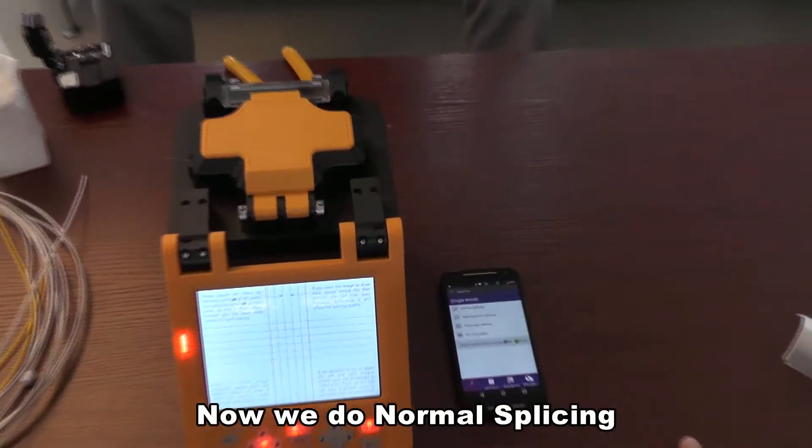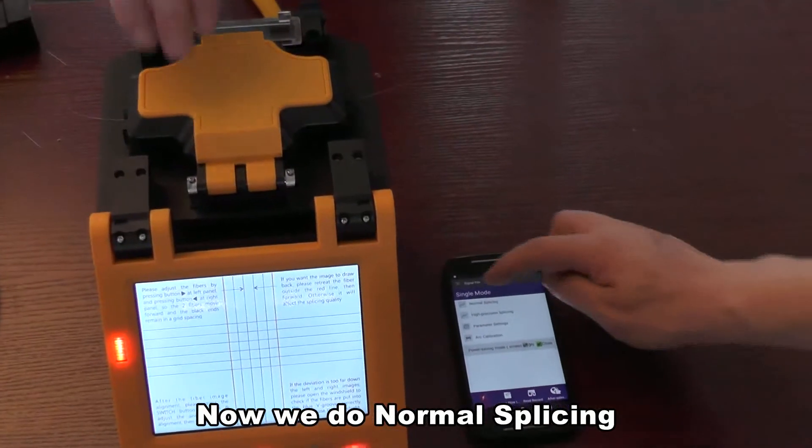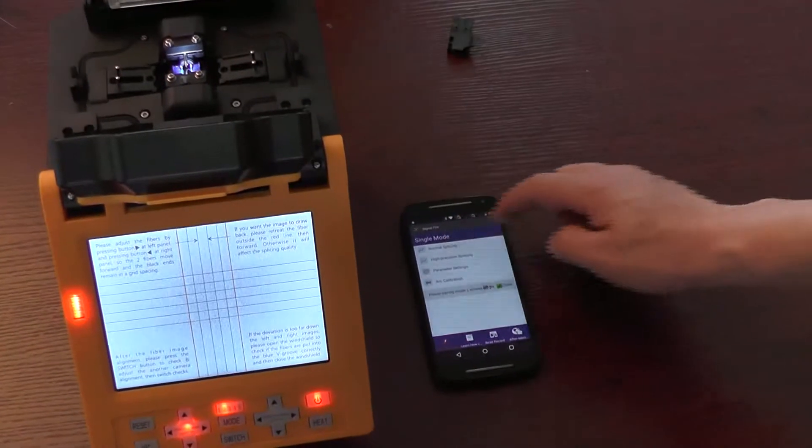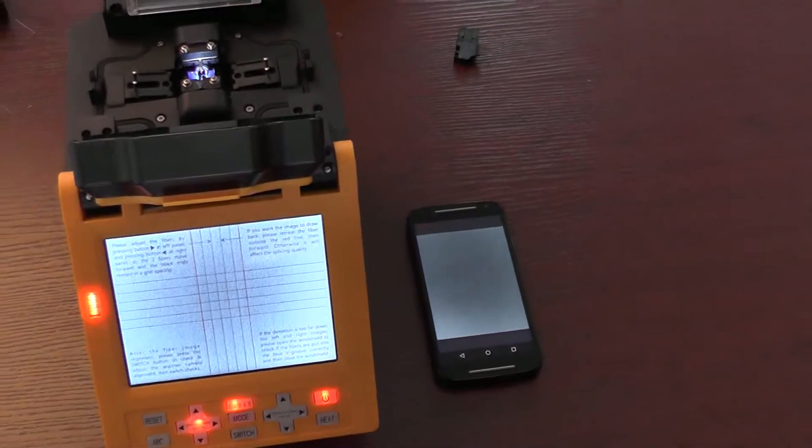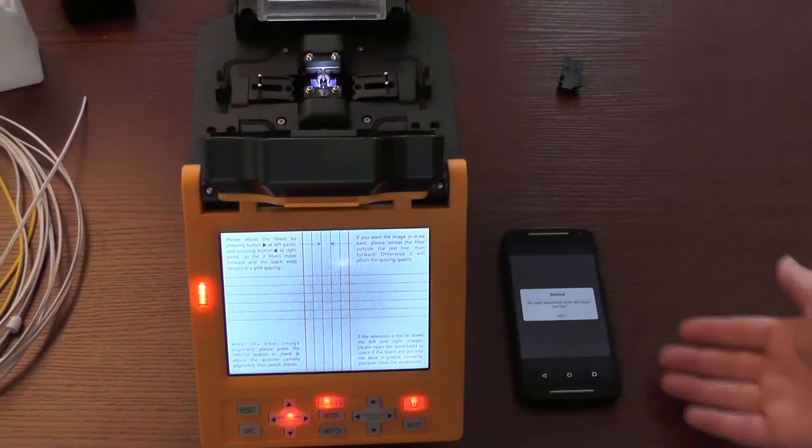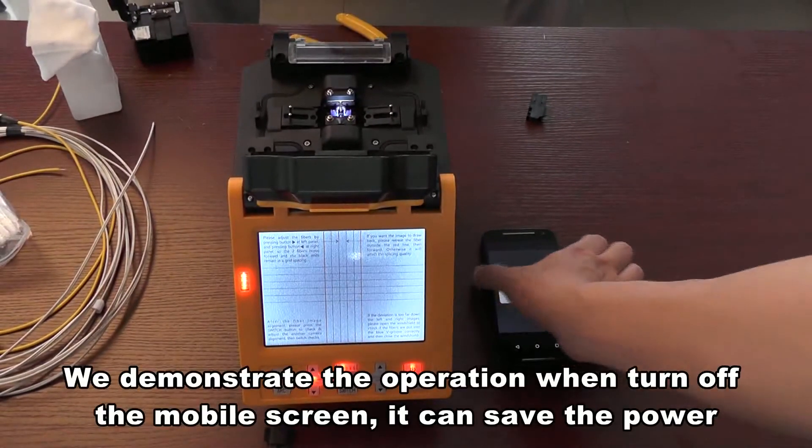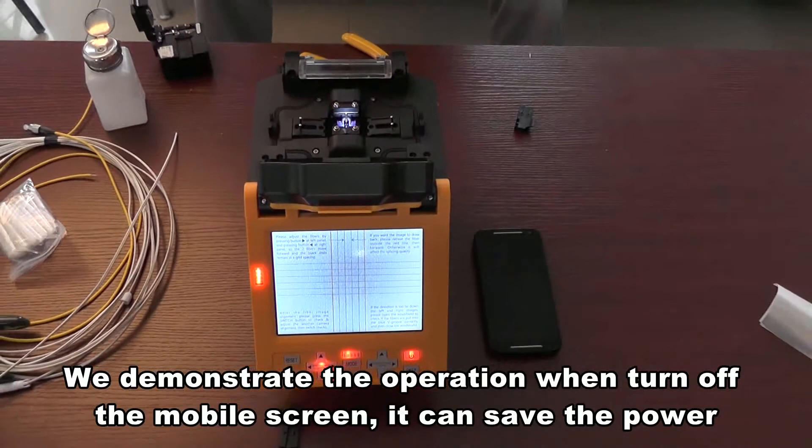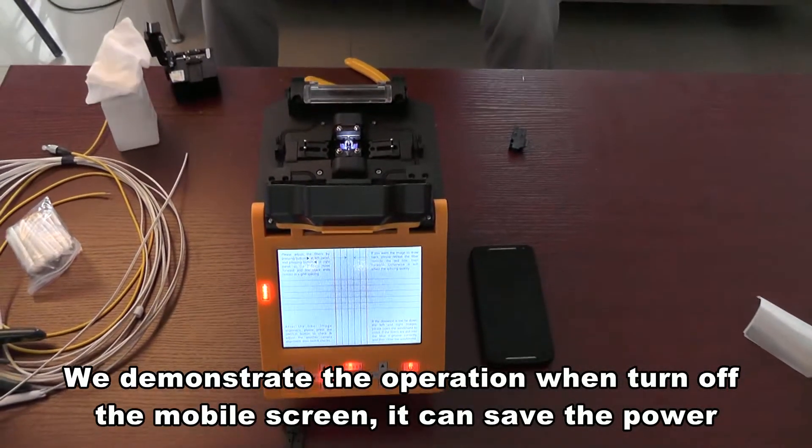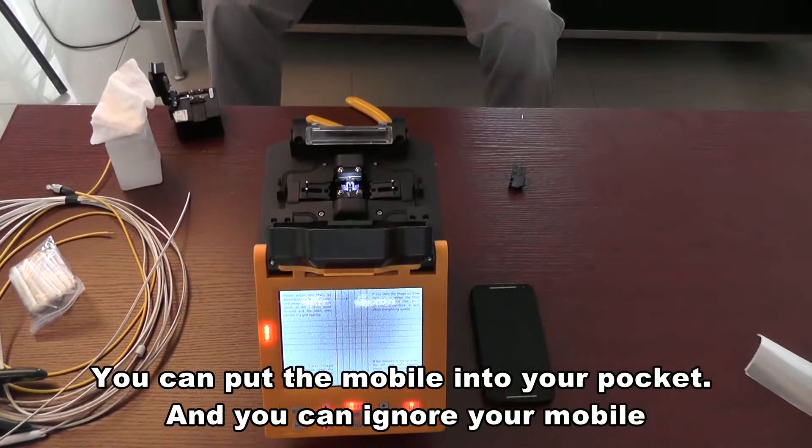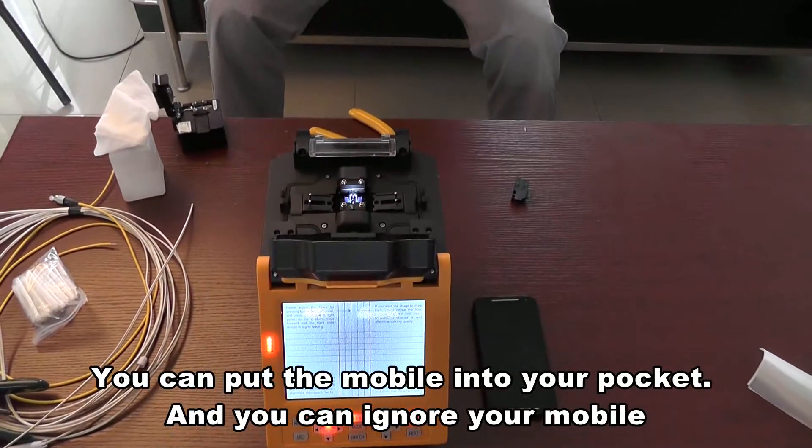Now we do normal splicing. We demonstrate the operation when turning off the mobile screen. It can save the power. You can put the mobile into your pocket and you can ignore your mobile.